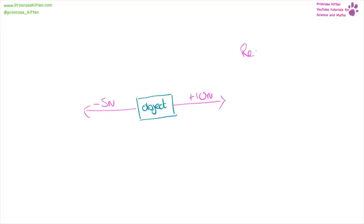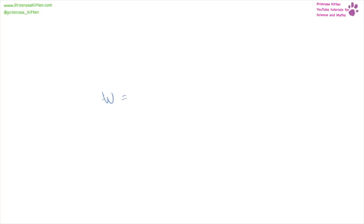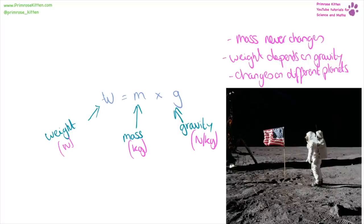If we're looking for the resultant force, we need to find the difference between them. For example, 10 plus 10 newtons minus 5 newtons gives us plus 5 newtons in that direction. For the second one, plus 2 newtons minus plus 2 newtons gives us 0 newtons as the overall resultant force, so there is going to be no movement. Your weight is not the same as your mass, because your weight equals mass times gravity. Weight is measured in newtons, mass in kilograms, and gravity in newtons per kilogram. Your mass will never change, but your weight will change depending on the planet — which is why on the moon they were basically weightless and could jump around.